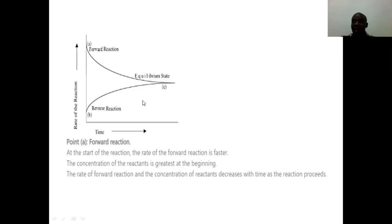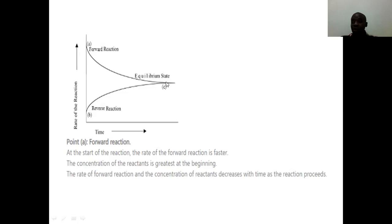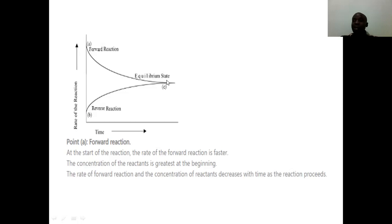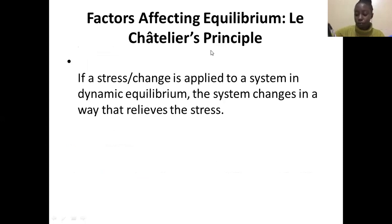Once equilibrium has been attained, it can keep shifting — that is why we call it a dynamic equilibrium state. The rate of the forward reaction and the rate of the reverse reaction are equal. If a change or stress is introduced, the equilibrium can shift either towards the right or towards the left in such a way that it removes that change. That statement is what we call Le Chatelier's Principle.